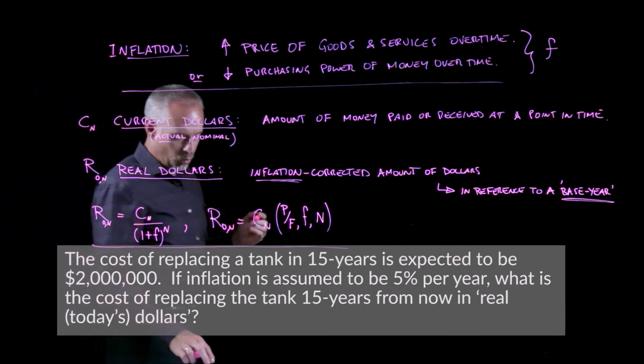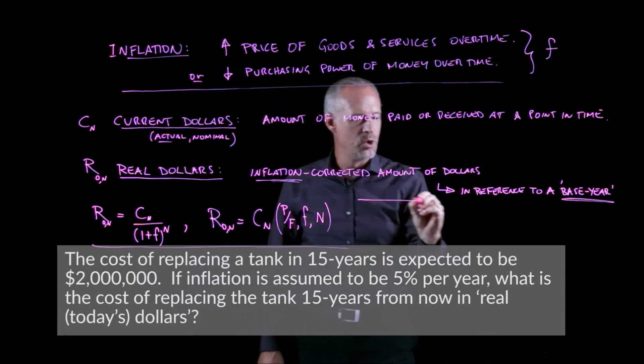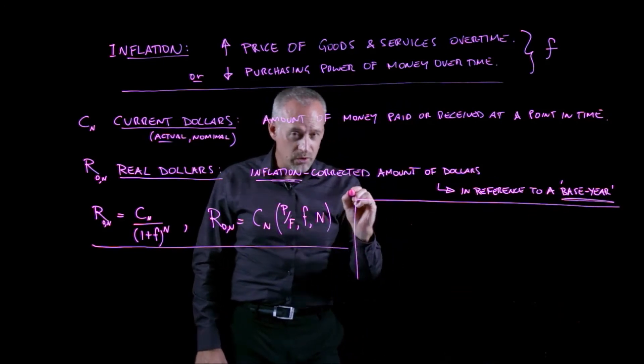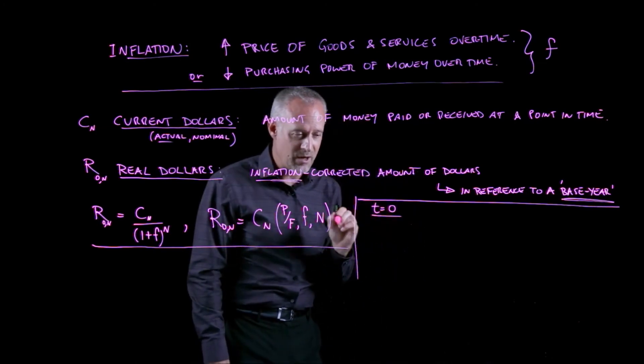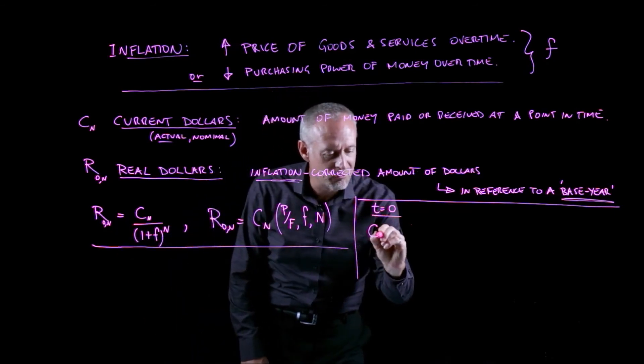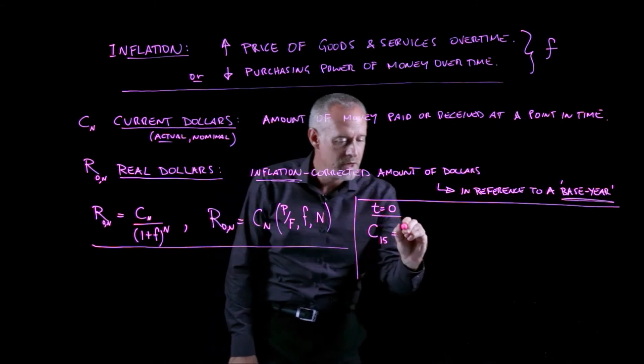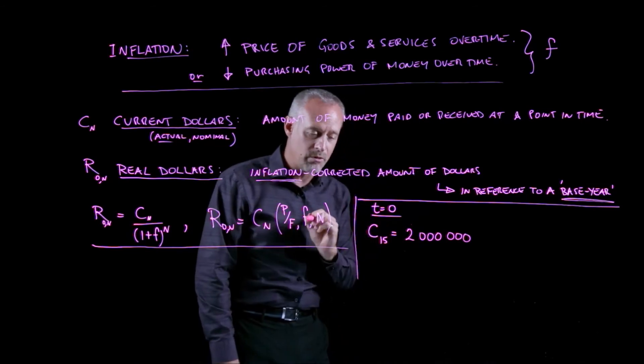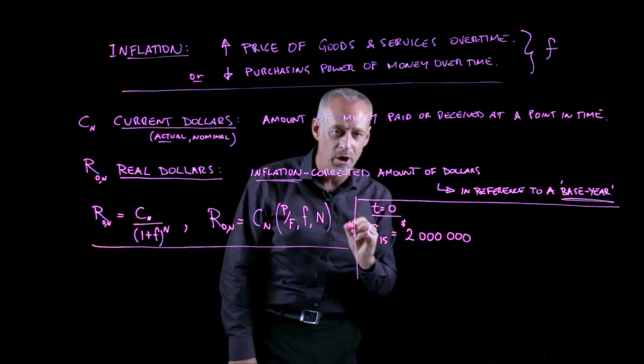So in this problem, we're faced with a scenario where a company wants to purchase a piece of equipment 15 years from now. Let's assume that T equal to zero is now, so today will be our base year for our real dollars. The problem tells us that the amount of current dollars 15 years from now that this equipment will cost is 2 million. So what that means is 15 years from now, the company will need to pay a dollar amount of 2 million dollars to buy that equipment.